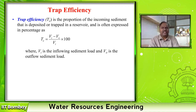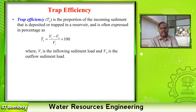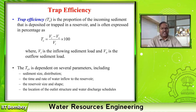Trap efficiency is the proportion of incoming sediment that is deposited or trapped in a reservoir, often expressed as a percentage: T = (volume of inflowing sediment load minus volume of outflowing sediment load) / volume of inflowing sediment load. We estimate what sediment is incoming and outgoing through the channels. Trap efficiency depends on several parameters: sediment size distribution, time and rate of water inflow into the reservoir, reservoir shape and size, location of the outlet structure, and water discharge schedules.